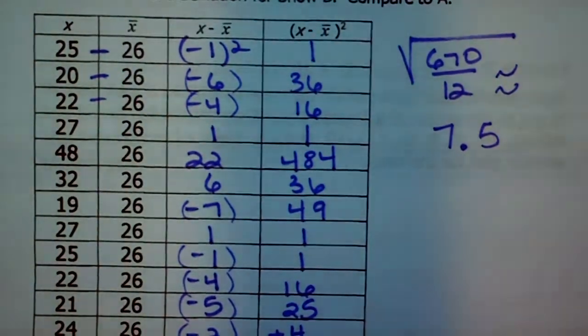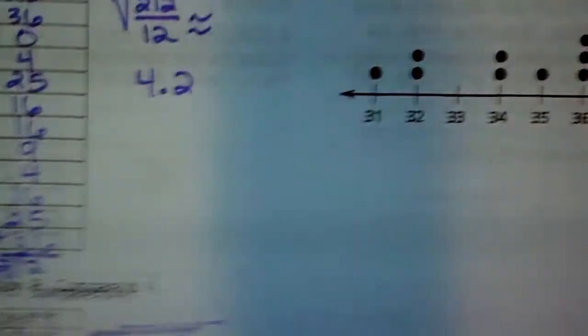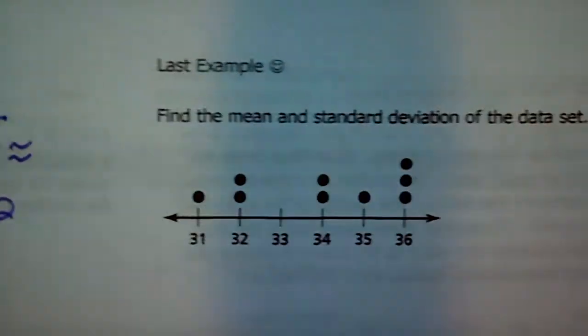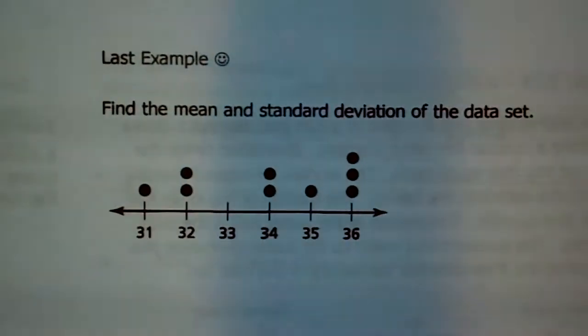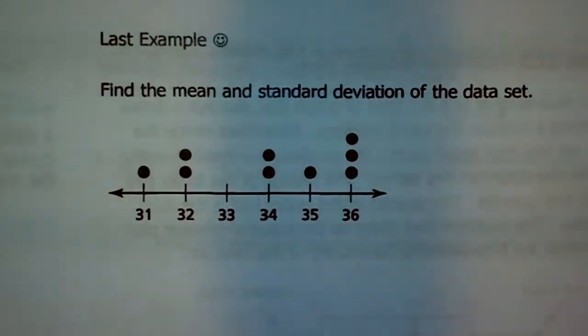So most of the values in the data set vary from the mean by about 7.5. We can still see from those two results that Show B has a greater deviation from the mean. Last example — I put a smiley face there to hopefully cheer you up because I know this is a bear of a lesson.